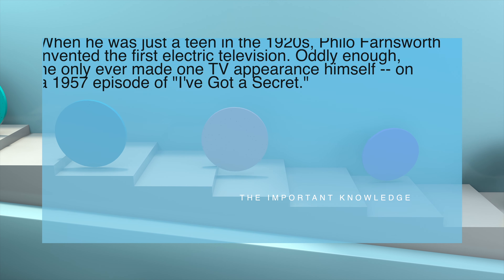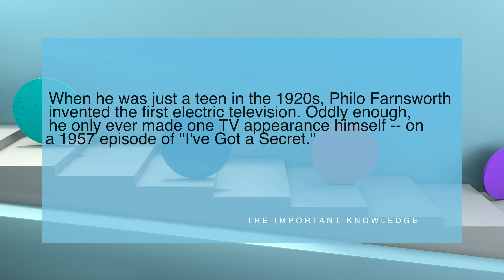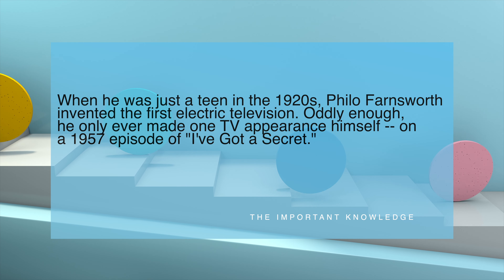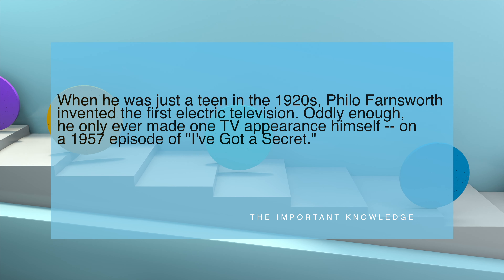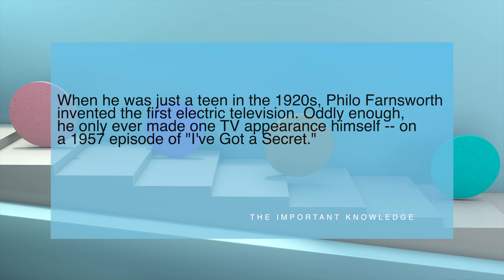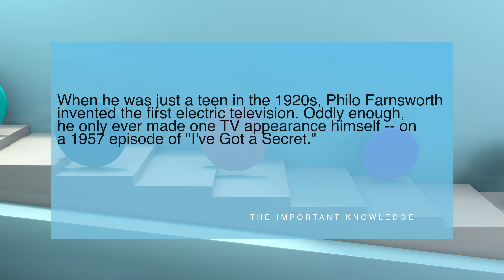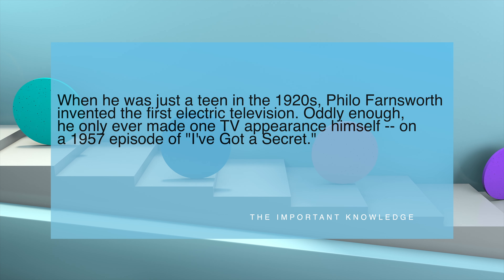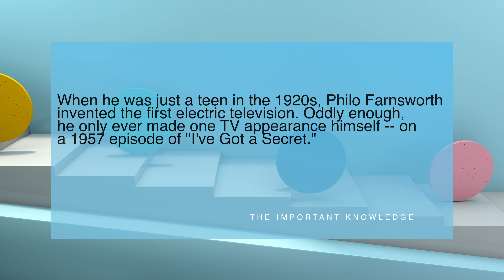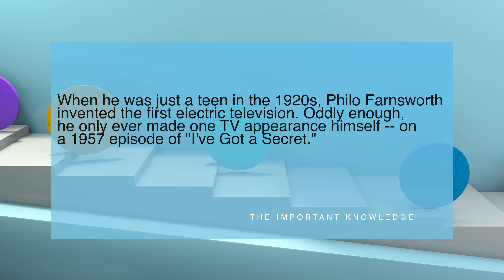When he was just a teen in the 1920s, Philo Farnsworth invented the first electric television. Oddly enough, he only ever made one TV appearance himself — on a 1957 episode of I've Got a Secret.